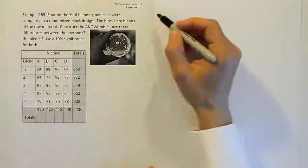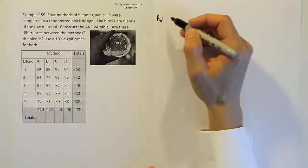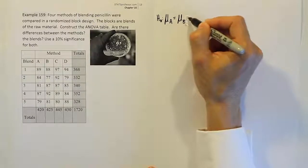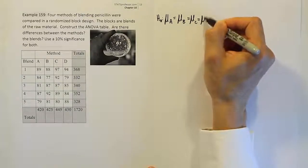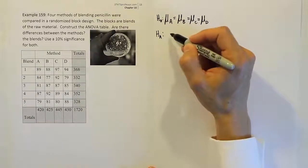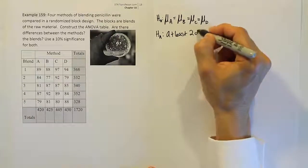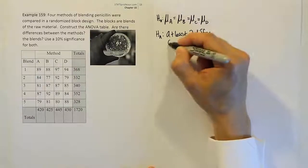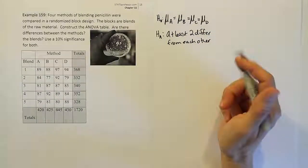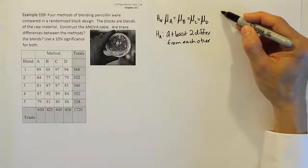Let's set up H0 and HA. For the treatment — the method — H0 states the classic hypothesis that they're all the same: the mean for A equals the mean for B equals the mean for C equals the mean for D. The alternative hypothesis says that at least two of these differ from each other — that is, you can find a pair that are not equal.